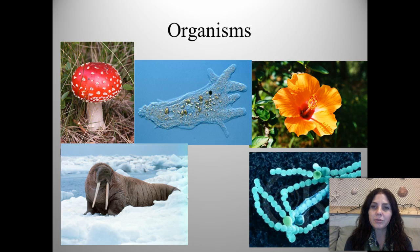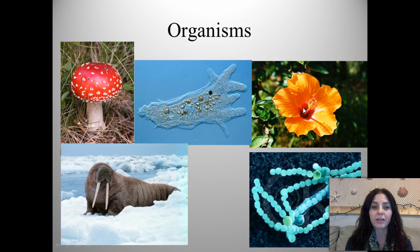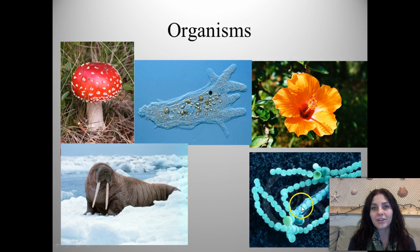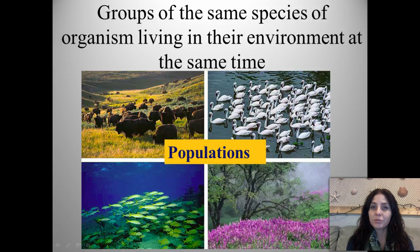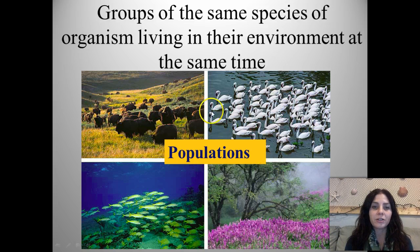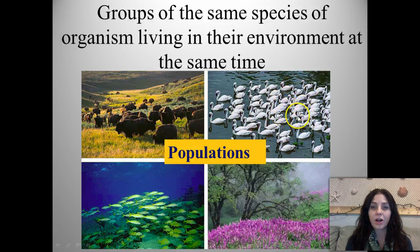Examples of organisms would be a mushroom, which is a fungus; an amoeba, which is a protist; a flower, which is a plant; a walrus, which is an animal; and bacteria. Groups of the same species living in an environment at the same time are called a population. Here you can see a population of bison, a population of swans, a population of flowers, and a population of fish.